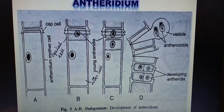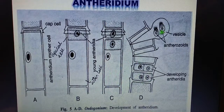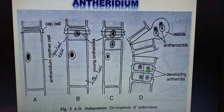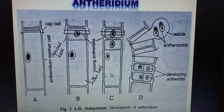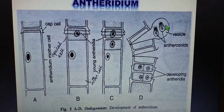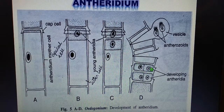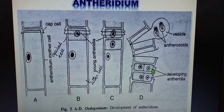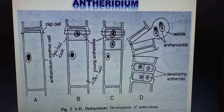Each nucleus gets surrounded by cytoplasm and metamorphoses into an antherozoid. Thus, each antheridium produces two antherozoids. So from the many antheridia formed, each antheridium gives rise to two antherozoids from these two nuclei.